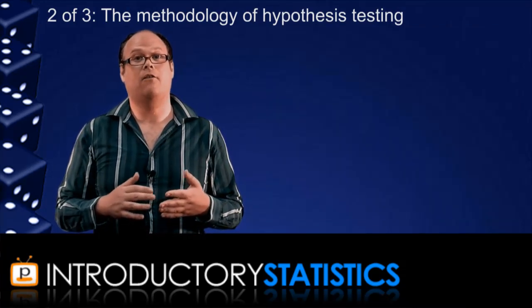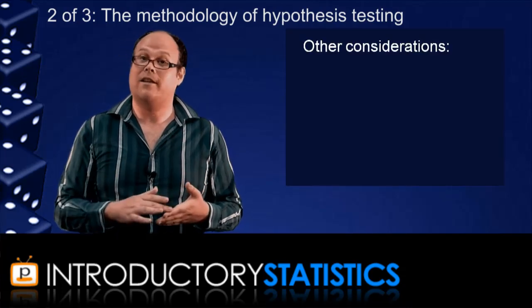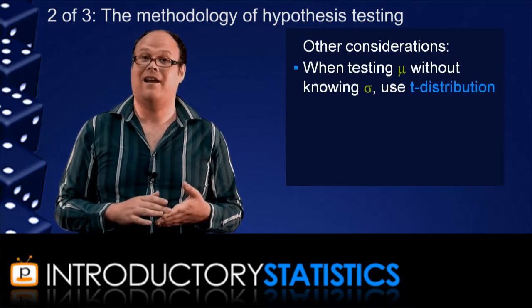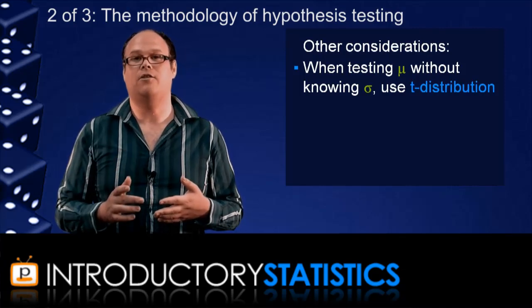Now, this talk is just a summary, so there are a lot of details I haven't gone into here. The main details are, as with estimation, if you're testing the mean and you do not know the population standard deviation, you have to use t-distributions instead of z.